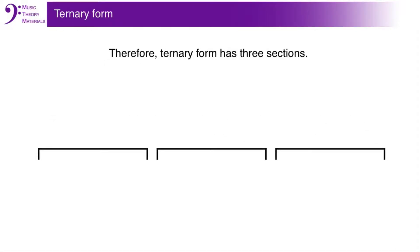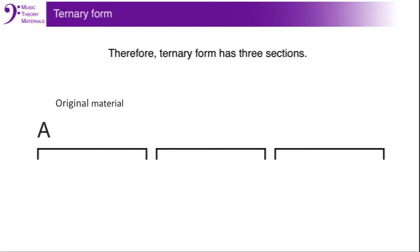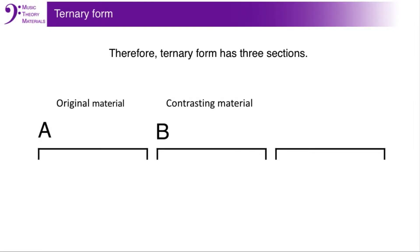Ternary form has three sections: the original material, A, followed by contrasting material, B, and then a return to the original material, A.